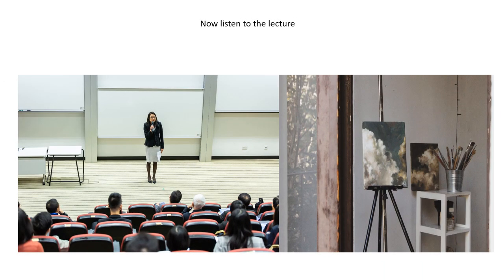Now listen to the lecture. Leonardo was born in Vinci, Italy around 1452 and was apprenticed to the artist Andrea del Verrocchio in Florence at an early age. Here he picked up a variety of technical abilities such as drafting, chemistry, metallurgy, metalworking, plaster casting, leather making, mechanics, and carpentry, as well as fresh viewpoints that would have a lasting impact on his artistic style.